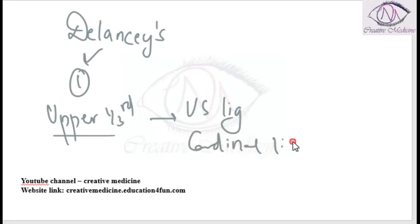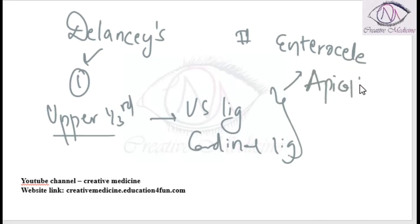Defects in the upper one-third of the vagina lead to enterocele, which is a posterior defect, and apical or vault prolapse, that is a central defect. This defect will result in elongation of the cervix.